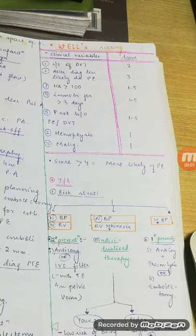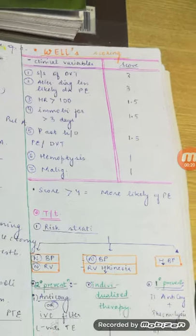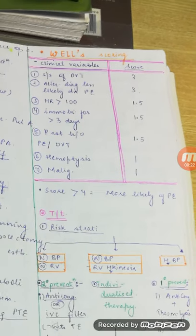Welcome to part 5 of respiratory medicine. Let's complete the left out portion of pulmonary embolism. We'll start with the Wells scoring — if the Wells score is more than four, it is likely to be pulmonary embolism. There are certain variables and a score is given for each of them.